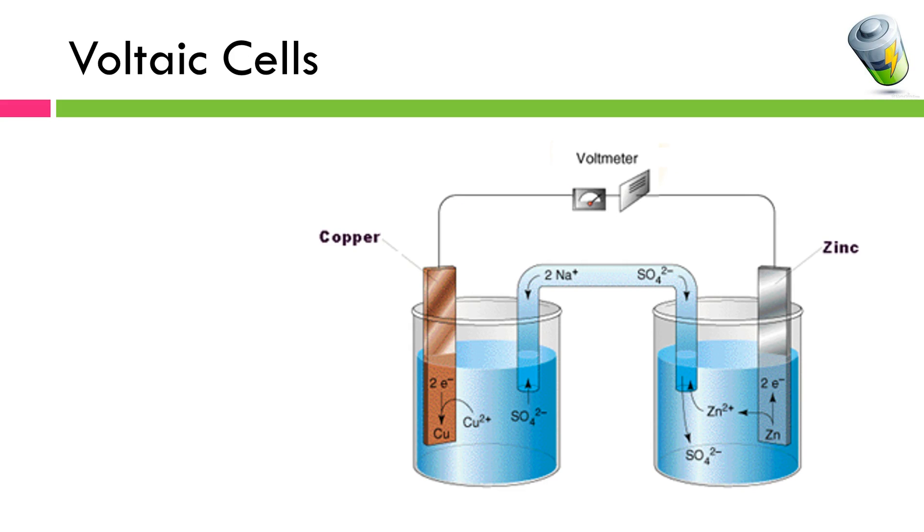So here's a picture of just a basic Voltaic Cell. Really nothing fancy. We've got two different beakers, we've got two strips of metals, sometimes just more generally called electrodes. We've got this tube connecting the two and then we've got a wire connecting the metals. Sometimes you'll see a voltmeter here. This is just something to measure the amount of energy being produced. Other times you might see like a light bulb or something here. Don't be confused by that, it's still the same general setup.